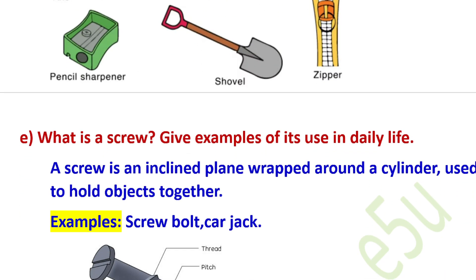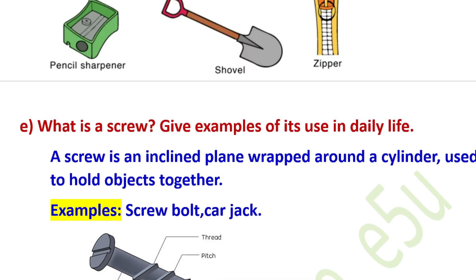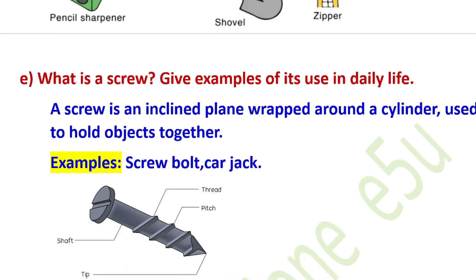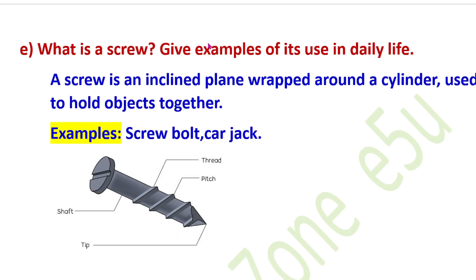What is a screw? Give examples of its use in daily life. A screw is an inclined plane wrapped around a cylinder, used to hold objects together. Examples: screws used in furniture, bottle caps, and jar lids.